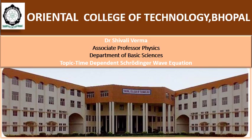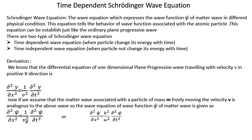Hello students, today we are discussing the time dependent Schrödinger wave equation. Before talking about it, I want to say something about the wave function. As you know in quantum physics, de Broglie said that there is a wave associated with each and every moving particle. This wave nature is depicted by a function known as the wave function, which represents the matter wave. The Schrödinger wave equation expresses the wave function psi under different physical conditions and tells us the behavior of the wave function associated with atomic particles.